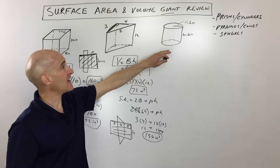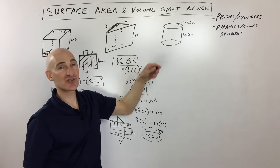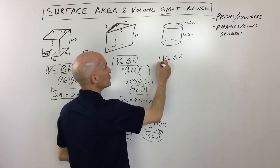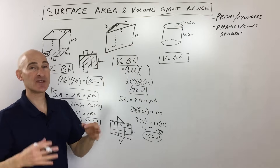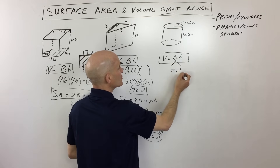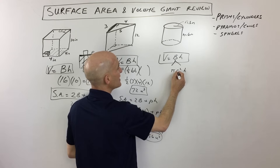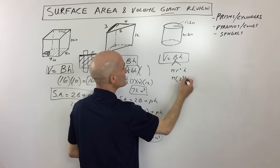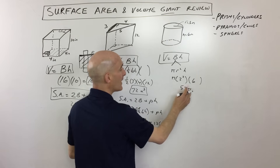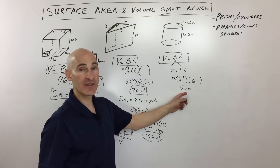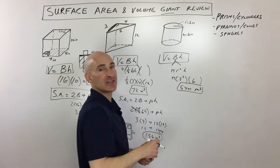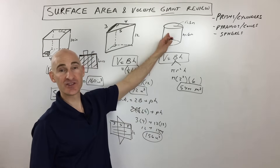Now let's talk about cylinders — a cylinder is like a circular prism, with circles on top and bottom separated by the height. For the volume, we use the same formula: area of the base times the height. Since the base is a circle, that's π r² times the height. The radius is 3, so 3² = 9, times the height of 6 = 54π. I'll leave it as 54π meters cubed.